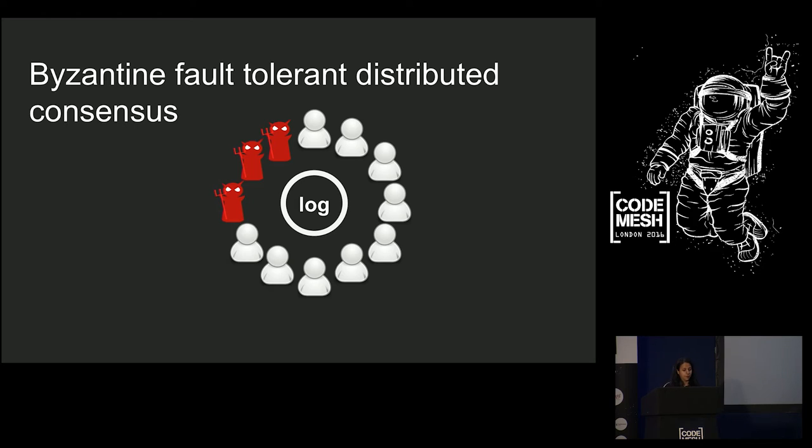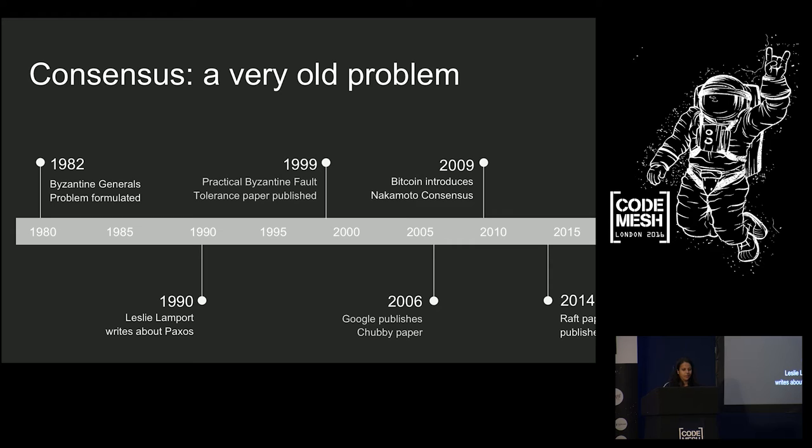They won't take the city, but some of the generals might be turncoats. So, they say they're going to attack, but they're really not going to. And there are protocols that can handle a small number of nodes being Byzantine, and we can still have this log. And just to be clear, consensus is a really old field. Here's a timeline. It was first talked about in the late 70s and early 80s. I think 1982 is when Leslie Lamport and others published this paper on the Byzantine generals problem.